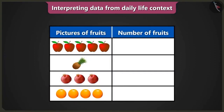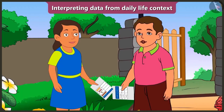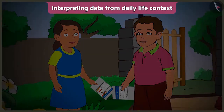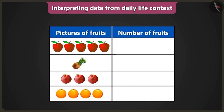Here it is. There are only pictures of fruits in this table. The number of fruits are not written. So what will you do now? I will go to the kitchen and count the number of fruits and come back. Stop — you do not have to go anywhere. All the data has been shown in this table.